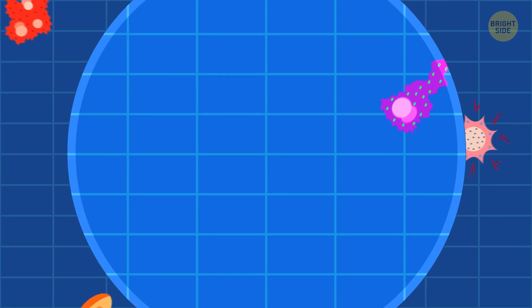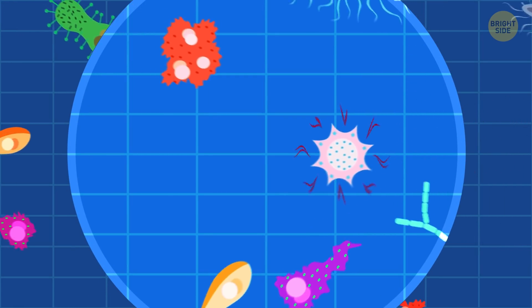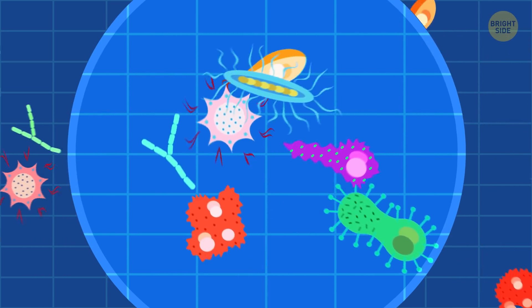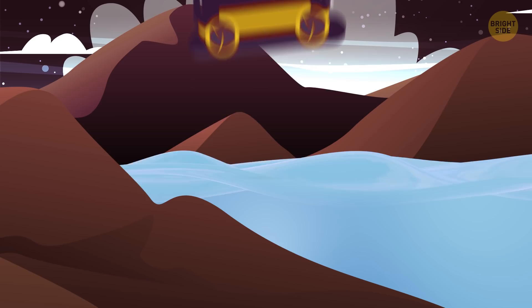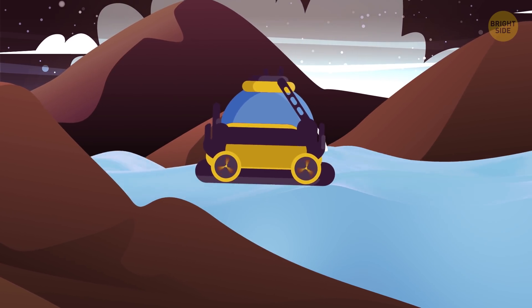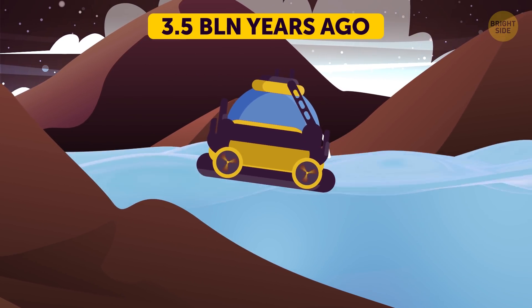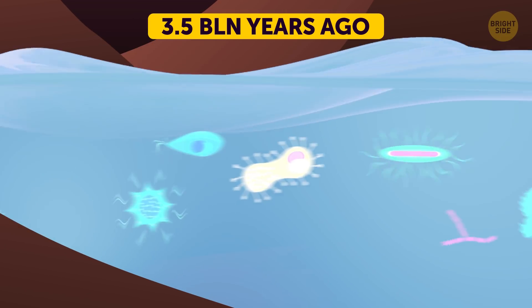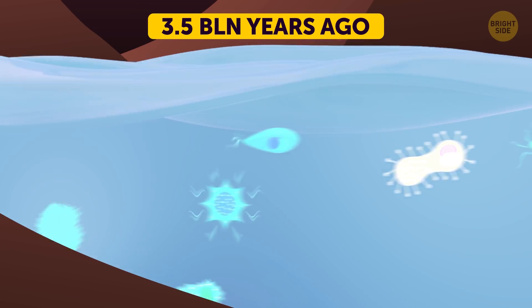I never thought I'd say this, but I'm excited to see all these bacteria here. It's a sign the Earth is becoming a suitable place for living creatures. But I still can't breathe normally because the atmosphere is extremely toxic 3.5 million years back. At least these early microorganisms will fill the atmosphere with oxygen over the next 2 billion years.